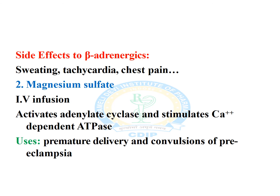Side effects of beta-adrenergic agonists are sweating, tachycardia, and chest pain. Magnesium sulphate as a tocolytic agent: IV infusion activates adenylate cyclase and stimulates calcium ion-dependent ATPase, thus helping in maintaining newborn survival. It also inhibits premature delivery and convulsions of preeclampsia.